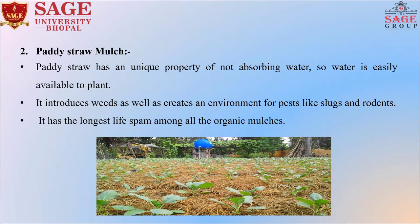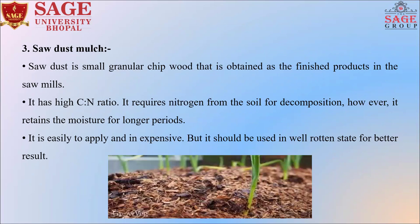The second is perlite mulch. Perlite has a unique property of not absorbing water, so water is easily available to plants. Perlite mulch also creates an environment for beneficial organisms and has the longest lifespan among all the organic mulches. The third is sawdust mulch. Sawdust consists of small granular chips obtained as a finished product in sawmills. It has a high carbon-to-nitrogen ratio and requires nitrogen from the soil for decomposition. However, it retains moisture for longer periods. It is easy to apply and inexpensive, but should be used in a well-rotted state for better results.